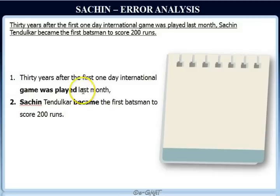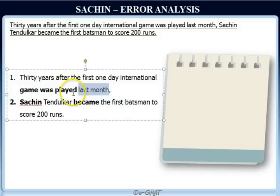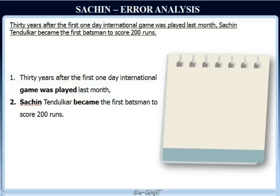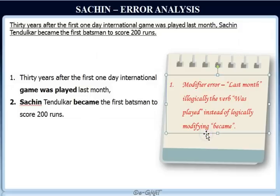Now let's look at the modifier, as we were discussing in our meaning analysis. 'Last month' logically should modify the verb 'became.' However, as written, it modifies the verb 'was played,' and that doesn't make sense. So this sentence has a modifier error. We need to find the answer choice that corrects that modifier error. Let's move on to our answer choice analysis.